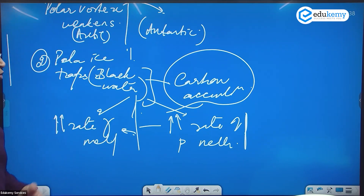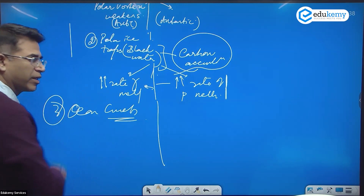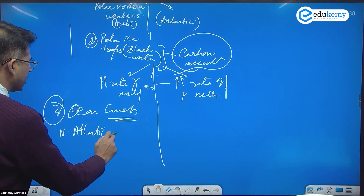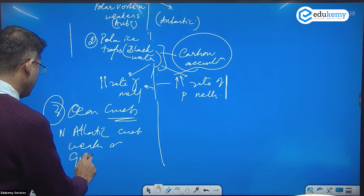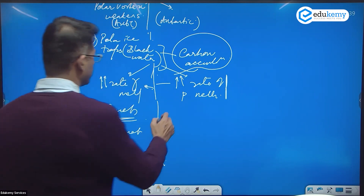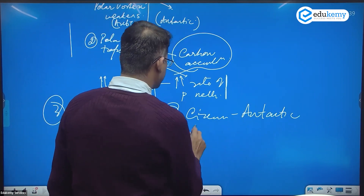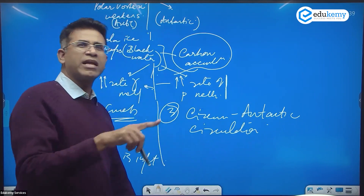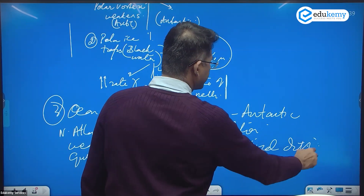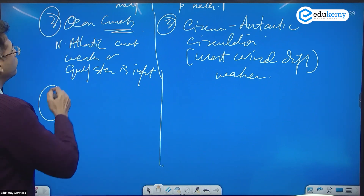The third specific impact is on ocean currents. Due to Arctic melting, the North Atlantic currents will weaken and the Gulf Stream is impacted. For Antarctica, the circum-Antarctic circulation — known as the West Wind Drift — will also weaken.